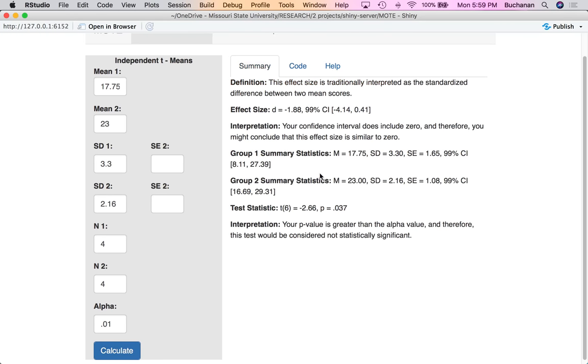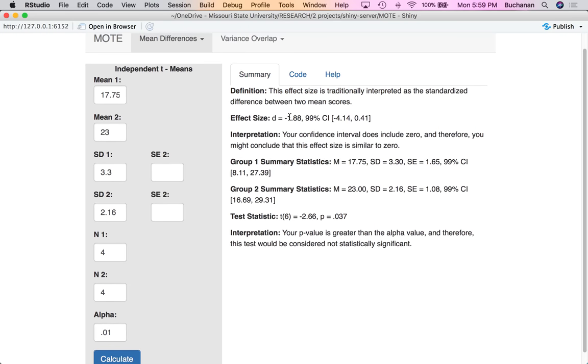I'm going to click on summary because that's where all the output is going to be. That effect size is almost negative two. So made up data, right? Our confidence interval, our 99% confidence interval because we entered an alpha of 0.01, is between negative four and 0.4. Because that confidence interval includes zero, we have included that interpretation here, which implies that that effect size is likely to be similar to zero because our confidence interval includes zero as an estimate. So even though this number would traditionally maybe be considered large, we should be a little suspicious about how wide this confidence interval is. Probably because we only have four people in each sample.